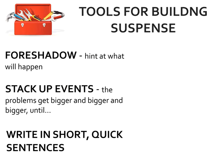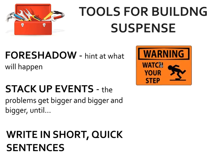There are a lot of different tools authors use to build suspense. One of the tools you'll see early on in a story is foreshadowing, when the author hints at what will happen in the future. For example, if a character sees a warning sign that says 'Watch your step,' we as the reader know that character is going to fall at some point — so we're sitting there waiting for that, which creates suspense.